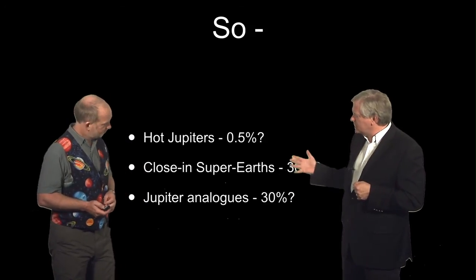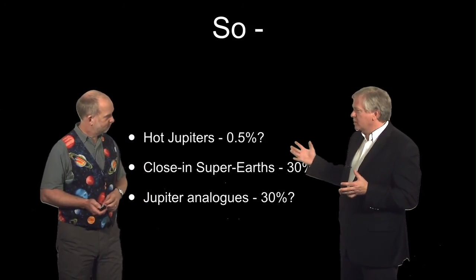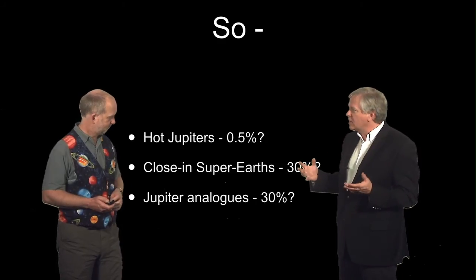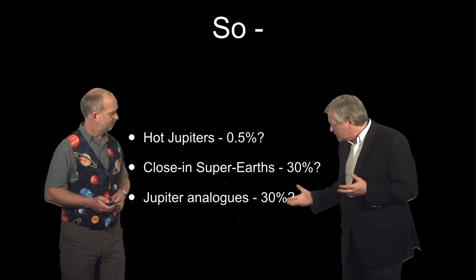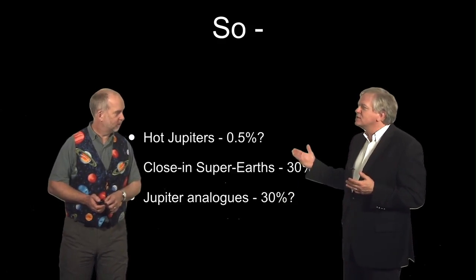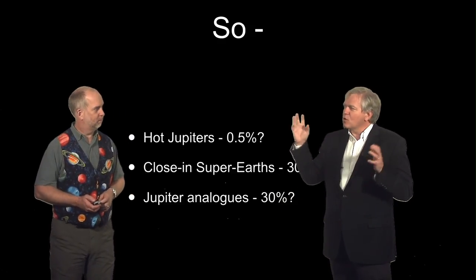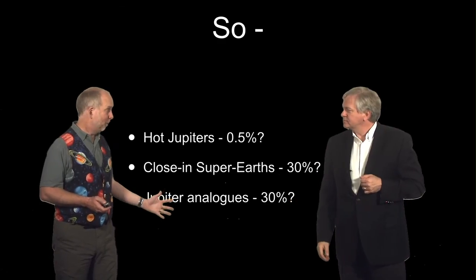But we are getting I think kind of an interesting picture here where solar systems seem to come in a variety of flavors and it may well be that they're mixed but certainly our own solar system does not appear to be grossly atypical. Though it's not dominant. Yes.